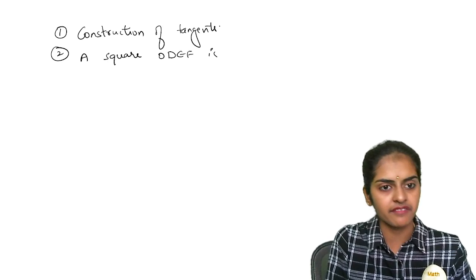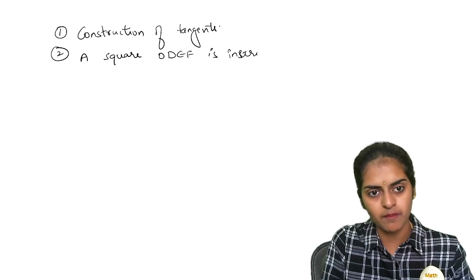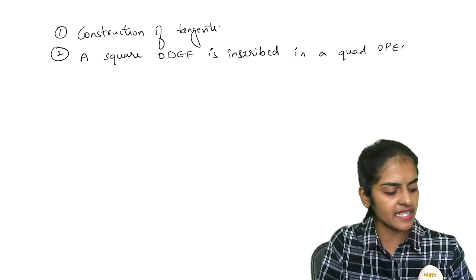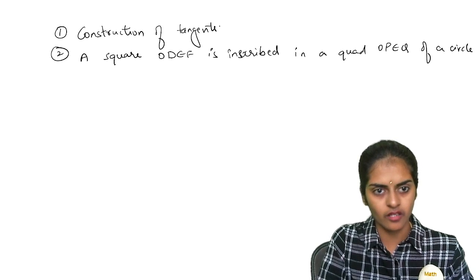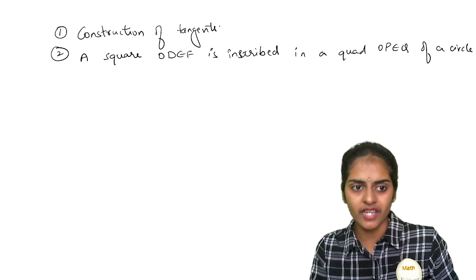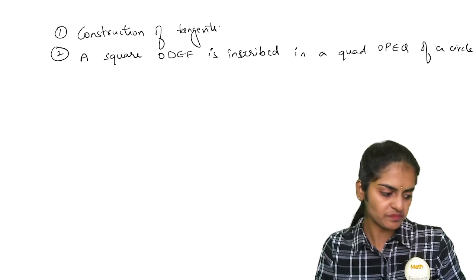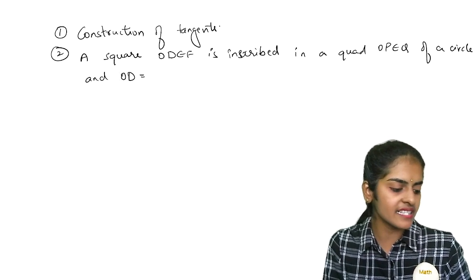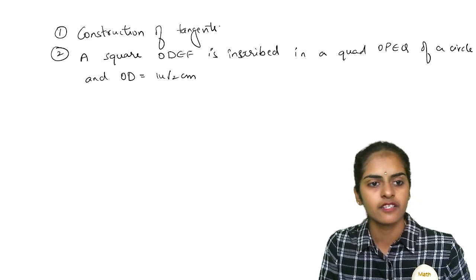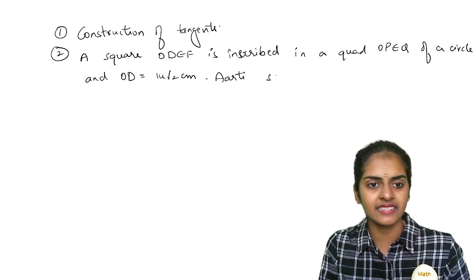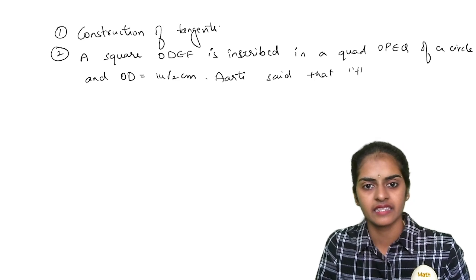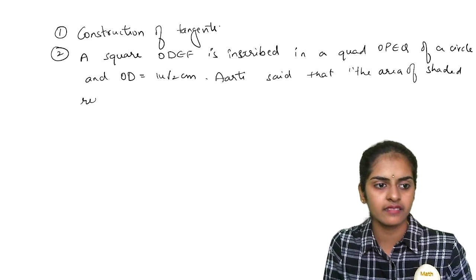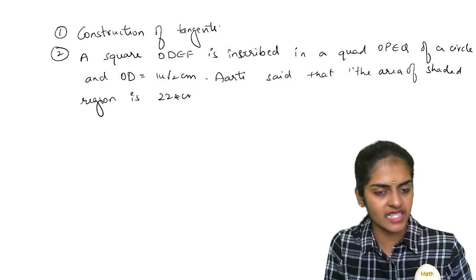A square ODEF is inscribed. Please do this question. A square ODEF is inscribed in a quadrilateral OPEQ of a circle. So there is a square in the circle. The square ODEF is inscribed in quadrant OPEQ of the circle and OD is given as 14 root 2 cm. So Aarti, Aarti said